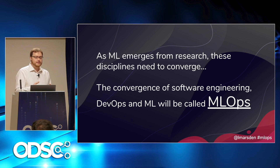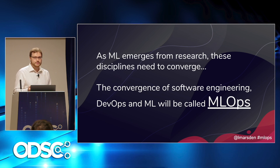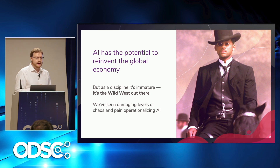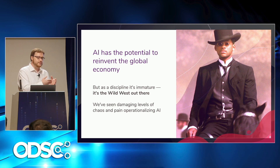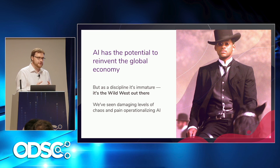My point here is that there's a convergence of software engineering, DevOps, and machine learning that will be called MLOps — the emerging industry term people use to refer to this. I also believe that AI has the potential to change the world in a genuinely positive way. At the same time, as a discipline it's immature because it's coming out of research and people are trying to figure out how to operationalize it. What my team has found in talking to hundreds of teams trying to do this in the last year and a half is that there are actually quite damaging levels of chaos and pain trying to operationalize AI.